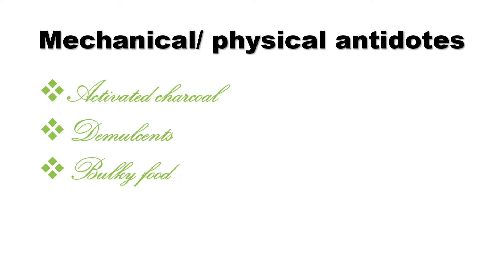Next, antidotes. Mechanical or physical antidotes mainly neutralize poisons by mechanical action or prevent their absorption. Activated charcoal, demulcents, and bulky food are considered mechanical antidotes. About activated charcoal: in many poisons we use activated charcoal as an antidote. Demulcents are substances which form a protective coating of the gastric mucous membrane and thus do not permit the poisons to cause any damage — for example, milk, starch, egg white, mineral oil, milk of magnesia, and aluminium hydroxide gel.